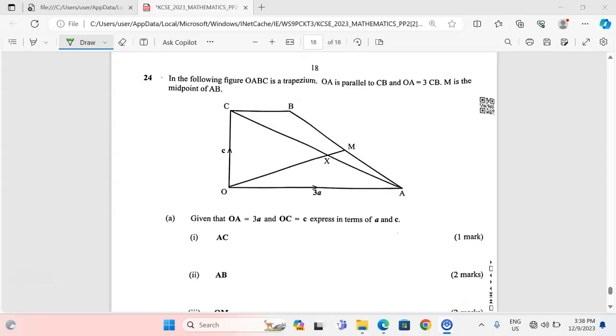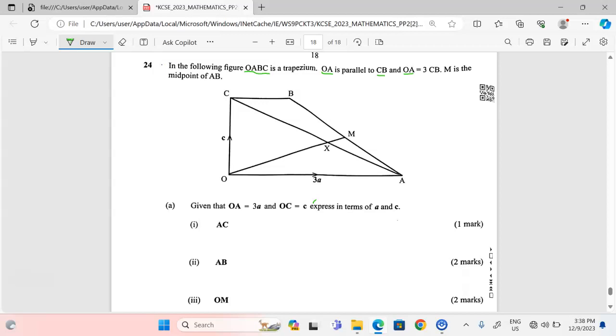Thank you for joining this lesson. We continue with the KCC 2023 mathematics paper 2. Let us look at the last question on vectors. In the following figure, OABC is a trapezium, OA is parallel to CB, and OA equals three vector CB. M is the midpoint of AB.